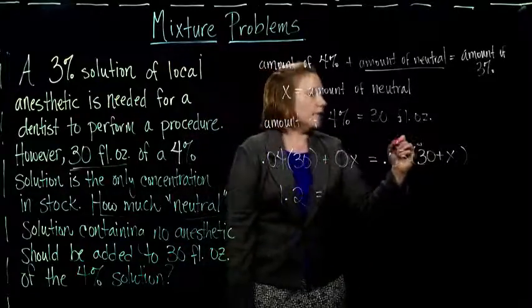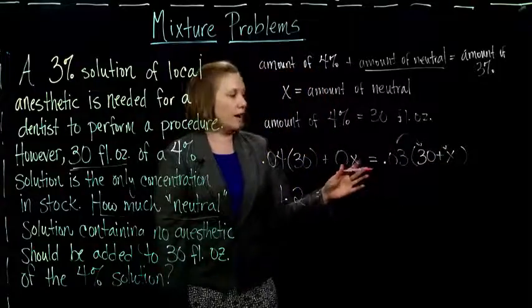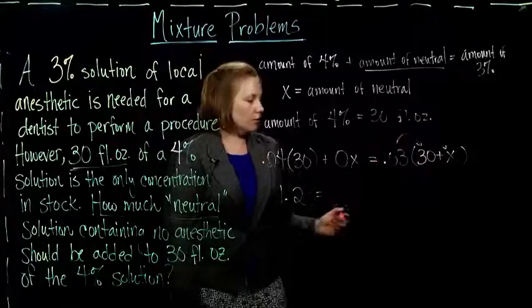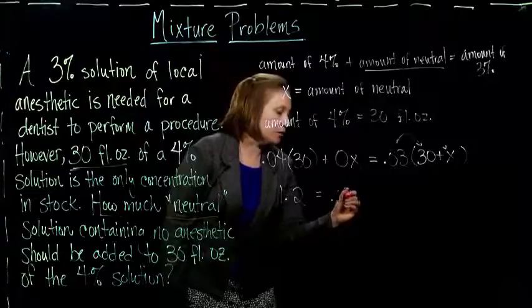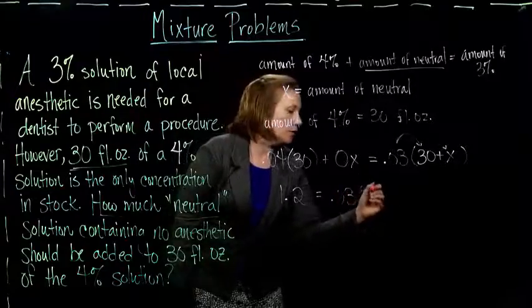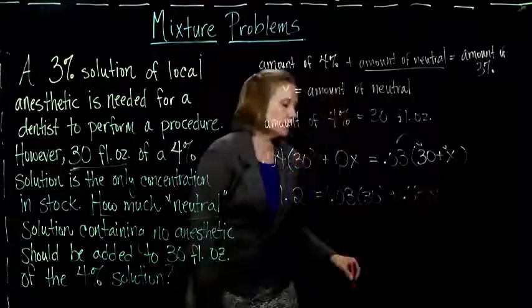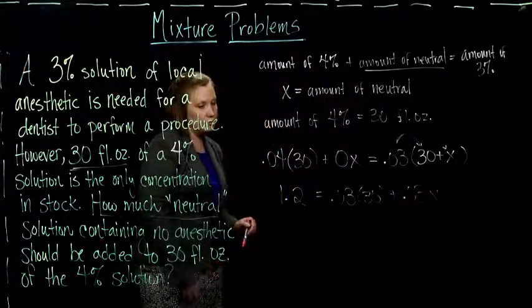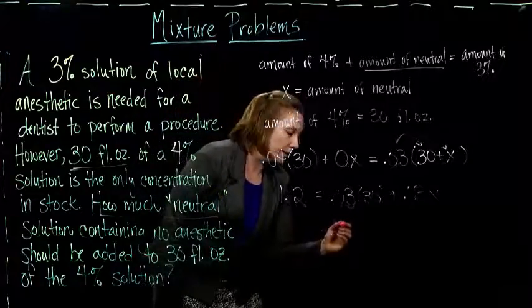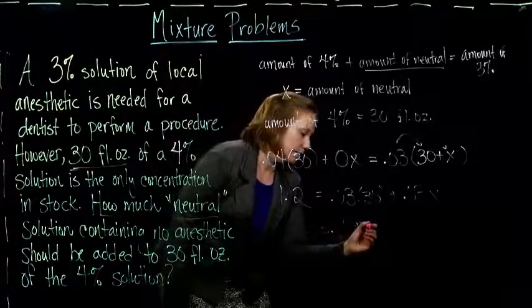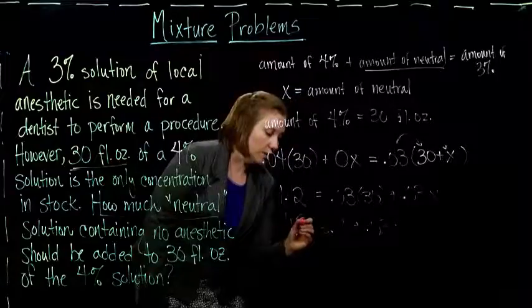And then, I have to recall from our solving equations section that I have to use the distributive property. So, I'm going to do 0.03 times 30, plus 0.03 times x. And I can do 0.03 times 30, that gives me 0.9.